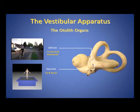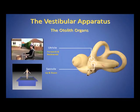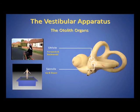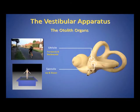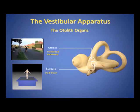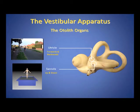The vestibular apparatus also consists of the utricle and the saccule. The utricle detects forwards and backwards movement such as in a car or motorbike. The saccule detects up and down movement such as lifts and jumping on a trampoline.